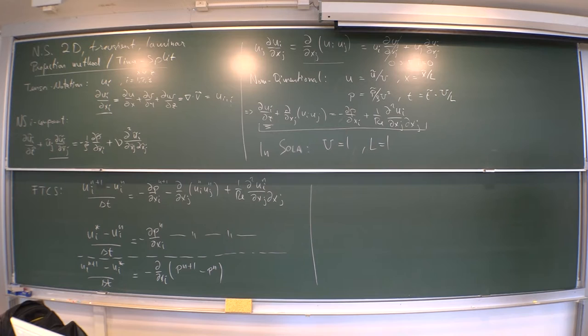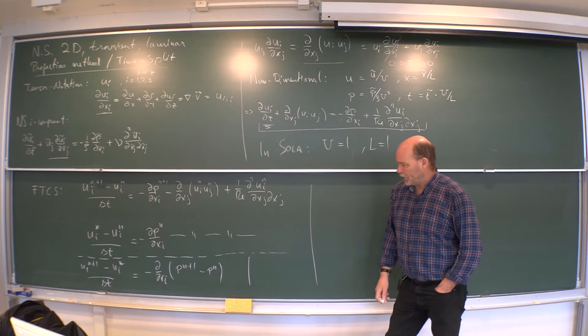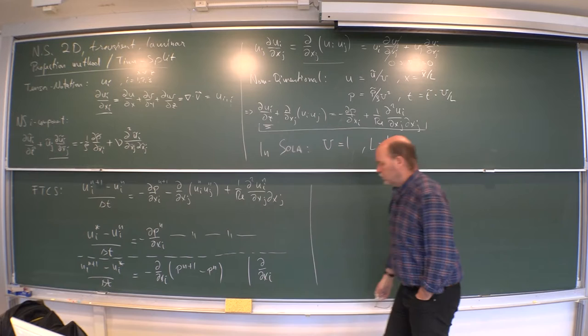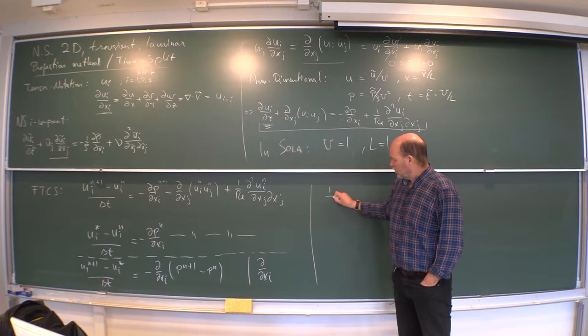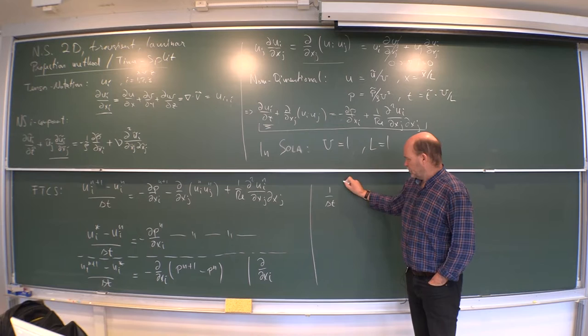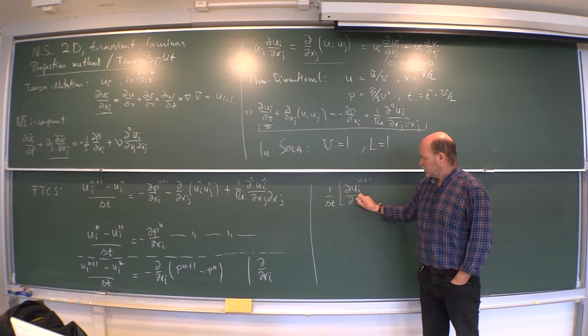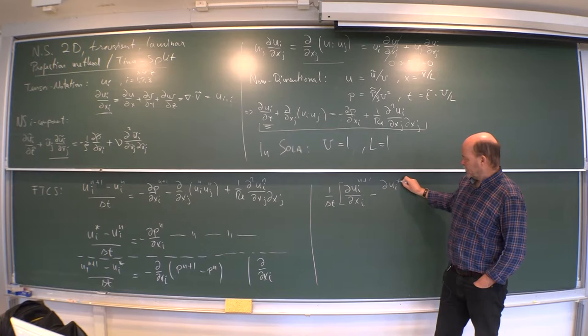Of course, you use the continuity. Take the divergence of this equation here. So you use an operator on it. d dxi on the entire equation. What are you left with? Well, you will have on the left hand side, one over delta t. And then you will have, what will it be? dui n plus one dxi minus dui star dxi. And then on the other side, minus double derivative dxi dxi of the pressure difference.